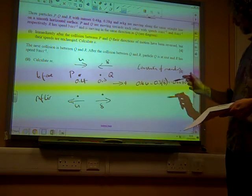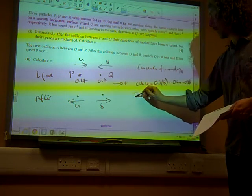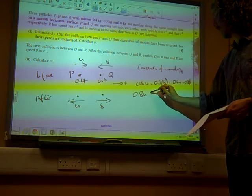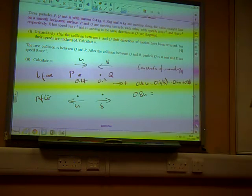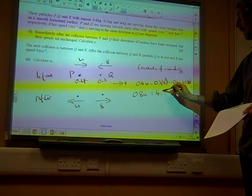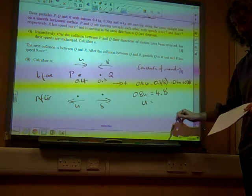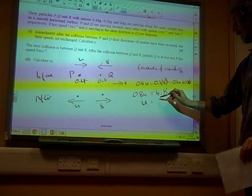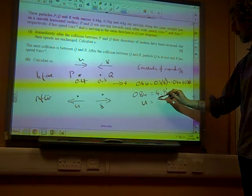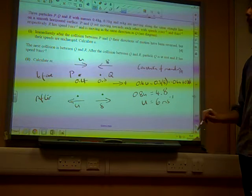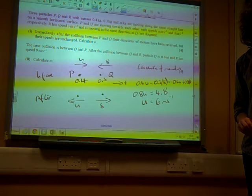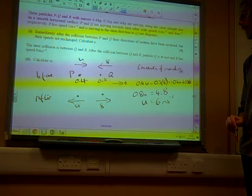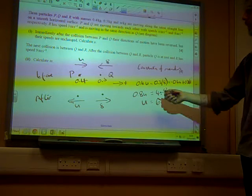And so we get, what do we get? Bring all the U bits, we have 0.8 times U, and we've got 2.4 plus 2.4, so 4.8. So U must be 4.8 divided by 0.8, which is 6 metres per second. There we go. That's the key equation, getting that right.